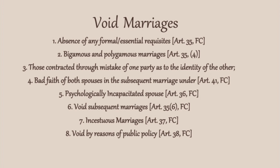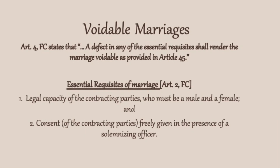Six, void subsequent marriages; seven, incestuous marriages; and eight, void by reason of public policy. Voidable marriages: Article 4 of the Family Code states that a defect in any of the essential requisites shall render the marriage voidable as provided in Article 45. The essential requisites of marriage under Article 2 of the Family Code are: one, legal capacity of the contracting parties who must be a male and a female; and two, consent freely given in the presence of a solemnizing officer.